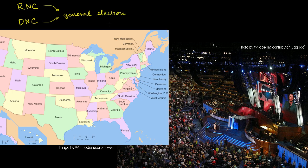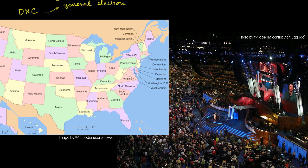A national convention for one of the parties will look something like this. This is the Democratic National Convention in 2008. You have all of the delegates over here, and everyone's all excited, and they start to cheerlead for their party and for their candidate. The Republican National Convention looks very similar. And although there's a lot of energy here, there actually isn't a lot of suspense — going into the convention, we usually know already who the candidates for each of the parties are going to be.